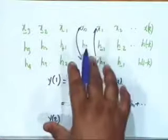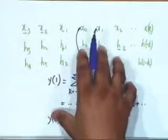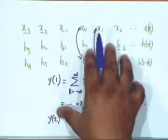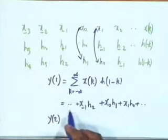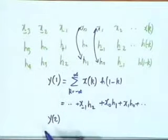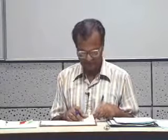This is also a practical method of evaluating convolution. Rather than writing out the full summation each time, all you need is a shift instruction, then multiplication column by column and addition. Even on a computer, this saves a lot of time.